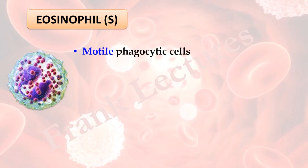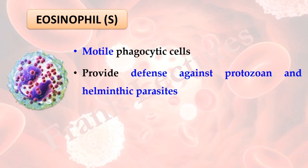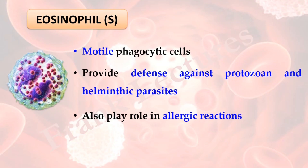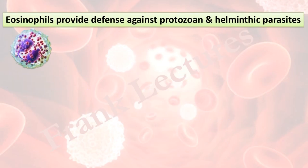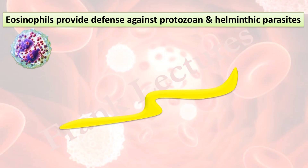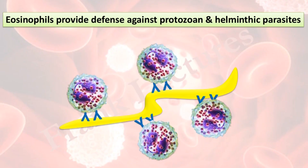Eosinophils are motile phagocytic cells. By motile, we mean that these cells have the ability to leave the bloodstream and migrate into tissue spaces. Eosinophils provide defense against protozoan and helminthic parasites, and they also play a role in allergic reactions. Although eosinophils provide defense against protozoan and helminthic parasites, it seems impossible that they ingest and destroy such large parasites by phagocytosis since the size of eosinophils is too small. Actually, eosinophils attach to the surfaces of such parasites and release substances which are harmful and which destroy these parasites.